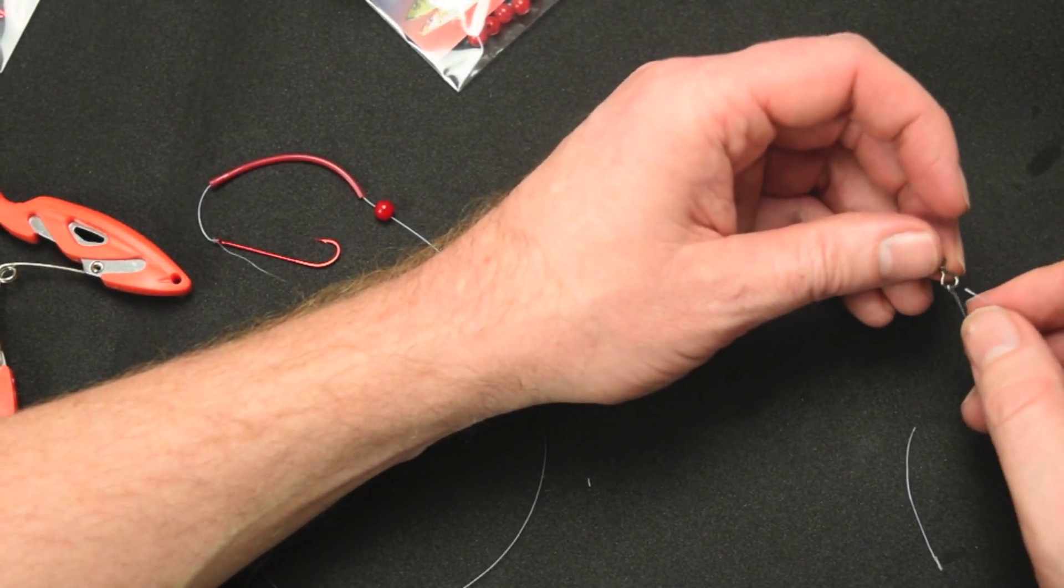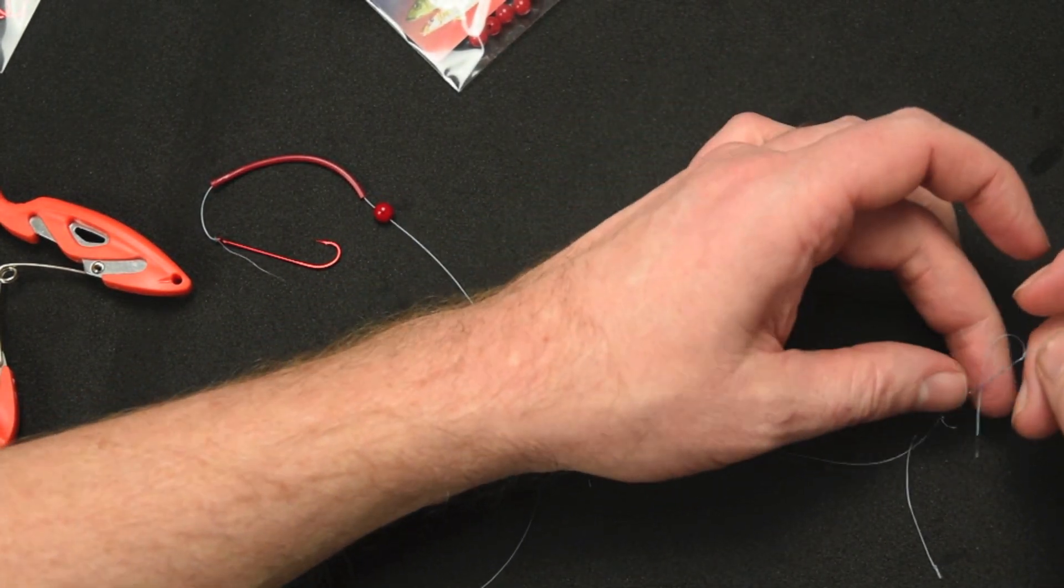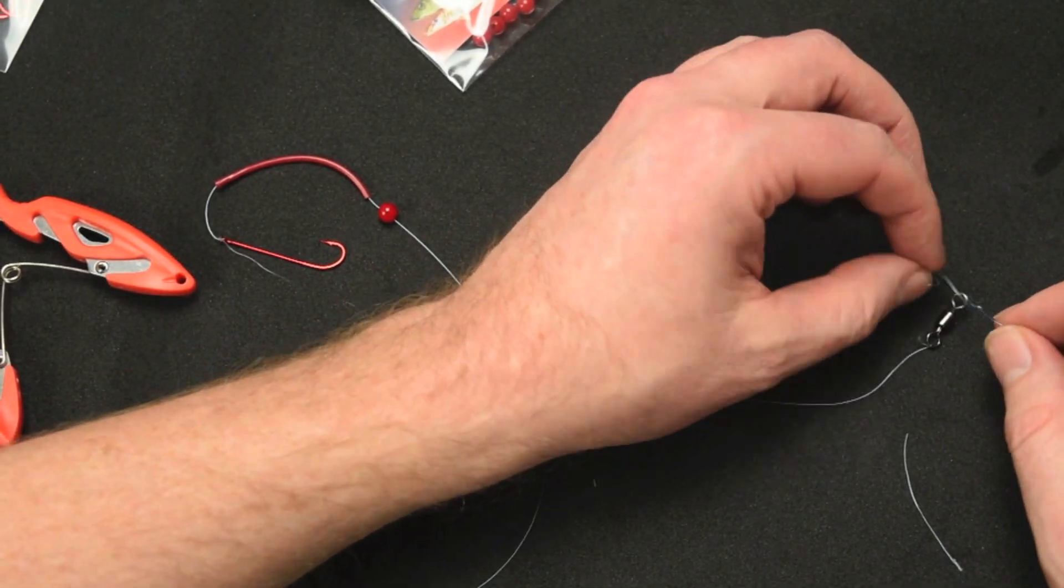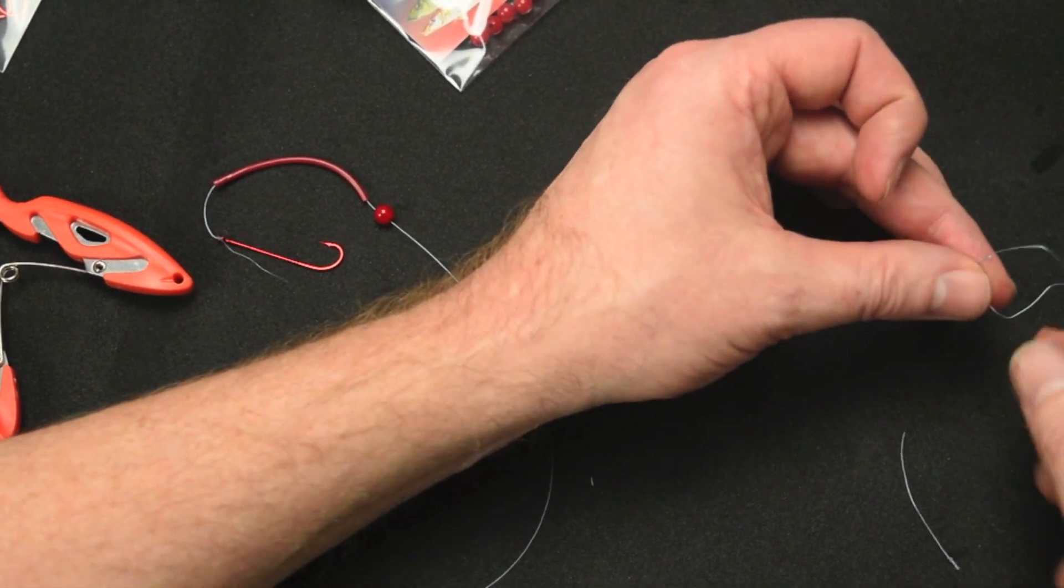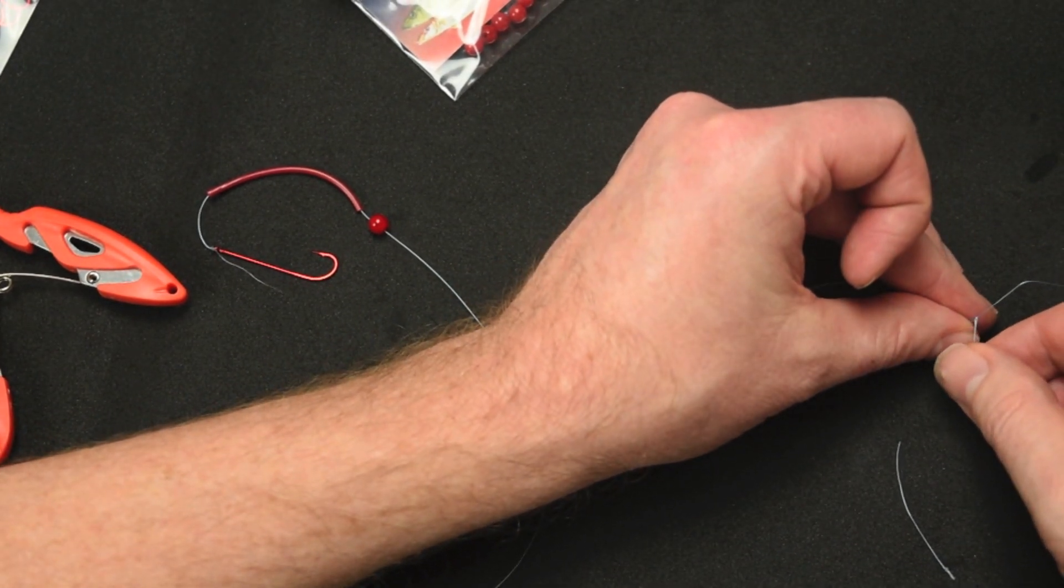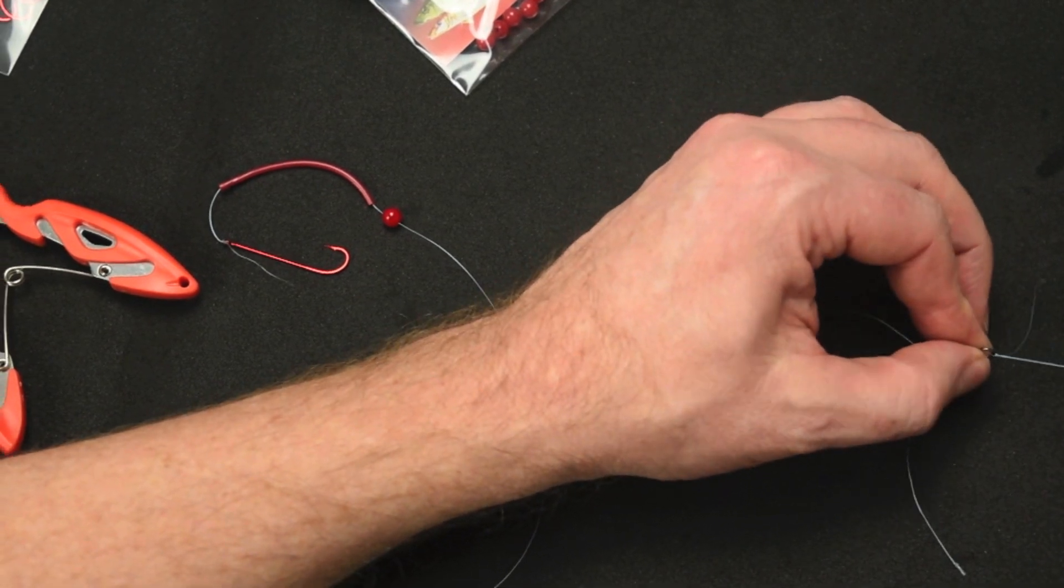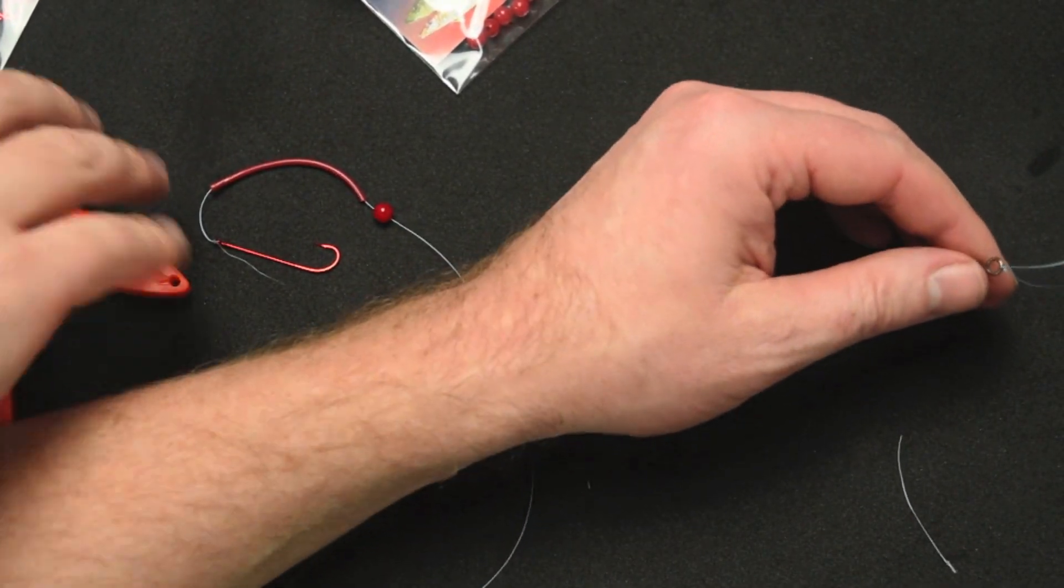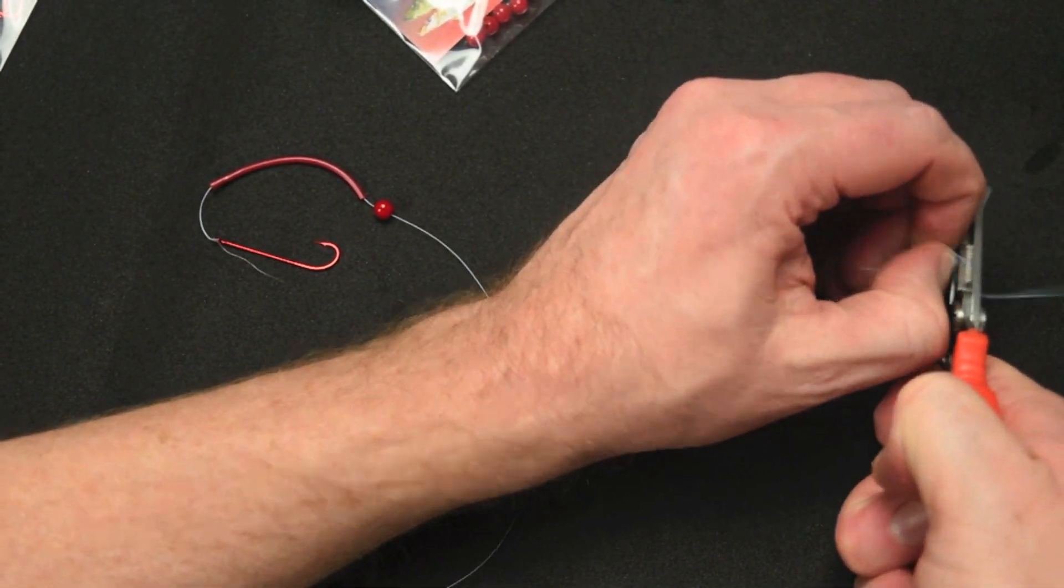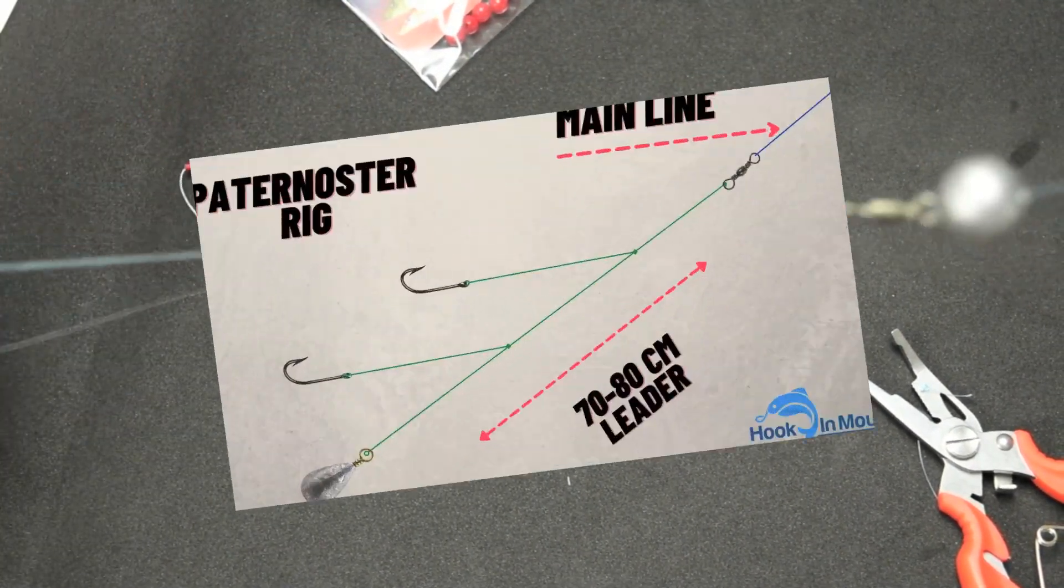And again tie another knot to the swivel and again we're just going to do quickly do a blood knot or a half blood knot. I like to go around about four times through the loop. Back through the next loop at the top to finish it off. You'll find braid a little bit harder to tie than the mono. There we go. And pull that tight. Clip off your tag. And there we have it. It's your running sinker.